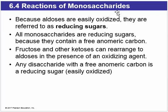Aldoses, since they are easily oxidized, are known as reducing sugars. And actually, all monosaccharides are reducing sugars, because they have a free anomeric carbon, which is easily oxidized. Even ketoses, such as fructose, are reducing sugars.